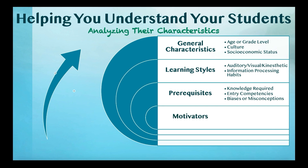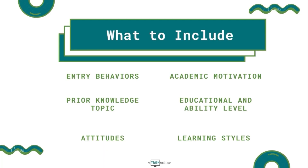Motivators: Determine the motivational and psychological factors of students. Consider things such as their achievement or social motivations, anxiety or cautiousness, and competitiveness. The aspects that should be included in the learner analysis include entry behaviors, prior knowledge of the topic, attitudes, general academic motivation, educational and ability level, and learning styles.